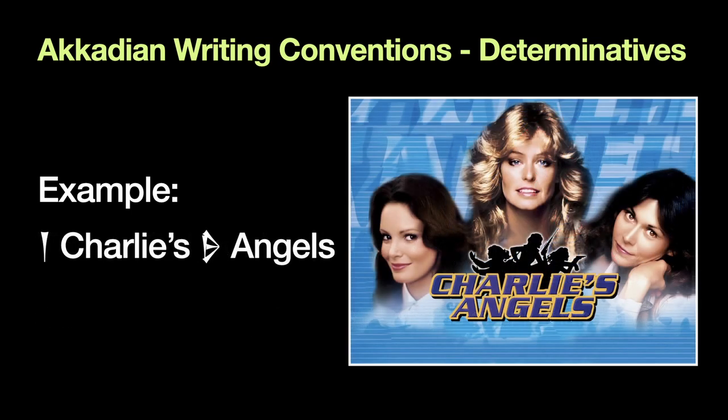Finally, for our examples, we're going to look at a great show: Charlie's Angels. There are two determinatives here. The first is just the 'dish' sign — not like dishes and plates, but the mark going down — and that indicates a person's name, a male person's name. Then if you look after 'Charlie' and in front of 'angels,' you see the female sign, which is 'munus' or 'sal,' sometimes 'me' too. So these are Charlie's Angels referring to a group of women. Of course I'm going to use the one with Farrah Fawcett in it — this is late 70s at its best.